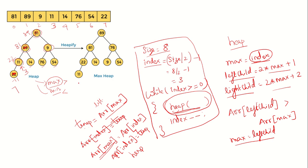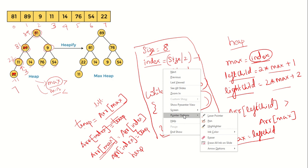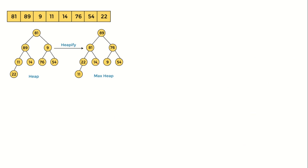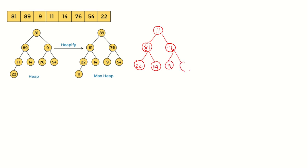Finally you will get the max heap tree. Now you have to do the sorting. For sorting, first you have to swap the root with the last leaf. So 11 will come to the top and 89 will go to the last position. So 89 is the largest element and it is now occupying the last position — it is sorted.